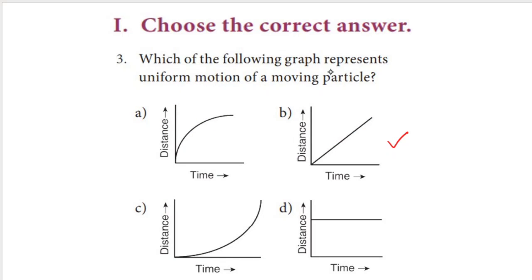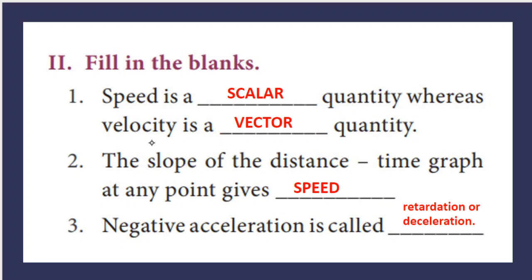Let us discuss the textbook questions. Which of the following graphs represents uniform motion of a moving particle? We just discussed that uniform motion is represented by a straight line, so the second graph is the right answer. Next: speed is a blank quantity and velocity is a blank quantity — speed is scalar and velocity is vector.